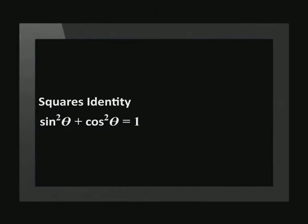The first identity we will derive is known as the Pythagorean or squares identity: sin squared theta plus cos squared theta equals 1. This means that whenever we add sin squared of an angle to cos squared of that same angle, the answer will always be equal to 1.